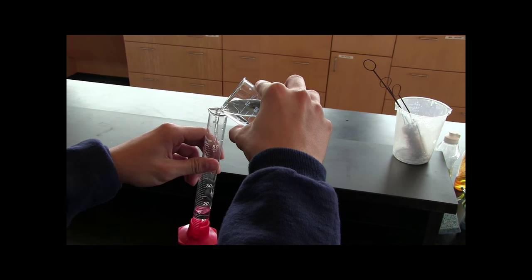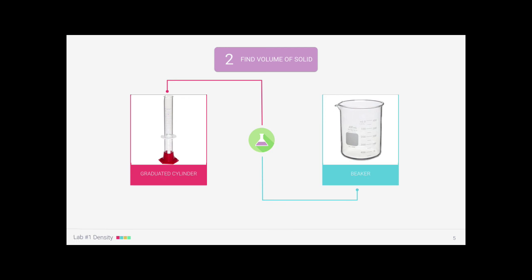But before we go any further, let's figure out our game plan and take a look at what we're doing. The water we just added is our initial volume. When we later add our solid to this cylinder, the water level is going to go up, giving us our new final volume. The difference between the final and initial volumes, that is the displacement, is the volume of our solid.